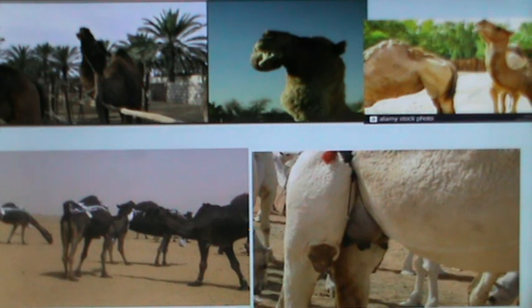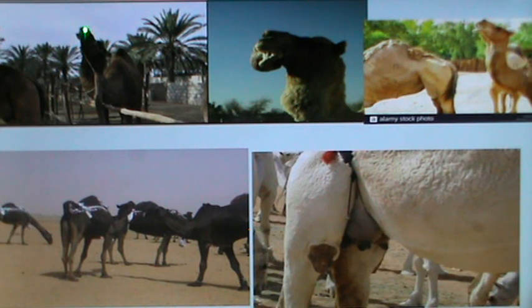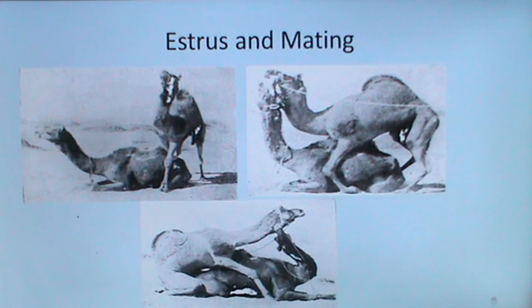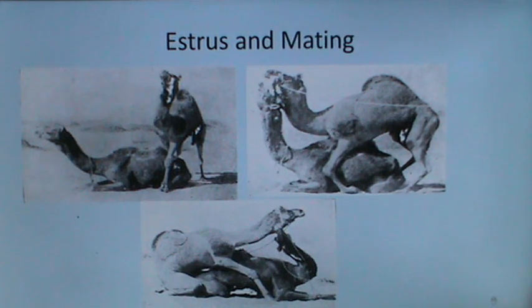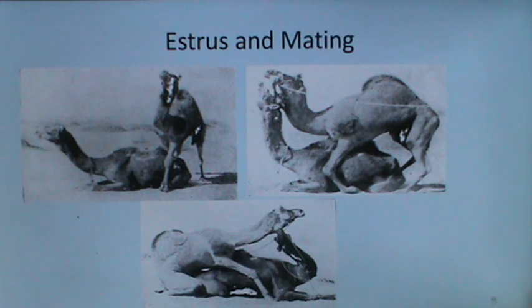The male camel extrudes the soft palate known as the Dulla and may sniff the female, evidencing the Flehmen response. When in front of a male, the female sits down ready to be mated. The male then adopts the mating stance, which is usually the sitting position, and the female and male may bite each other before mating occurs in a sitting position.